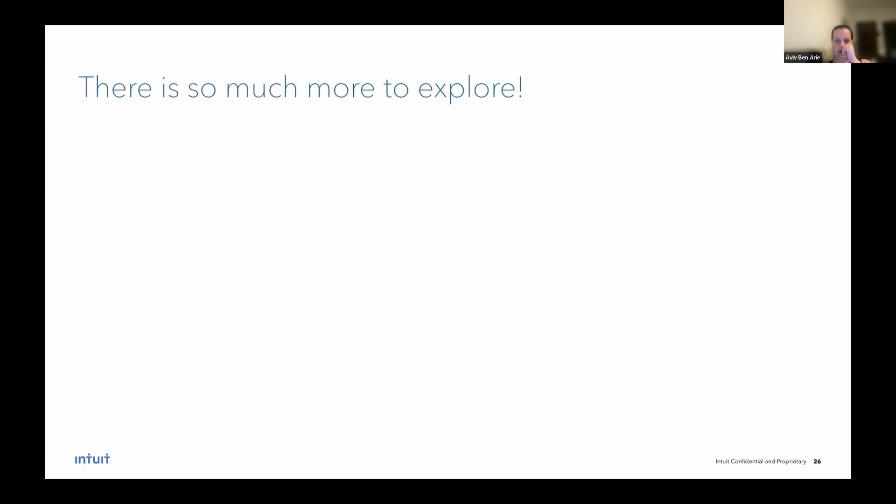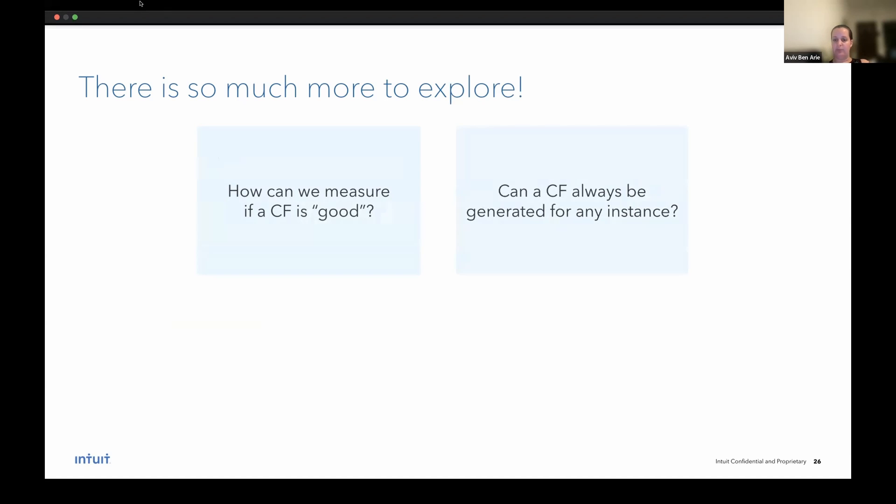So now that we talked a bit about how we want to solve this technical problem, we also understand that there is much more to explore on the more theoretical aspects of counterfactuals as well. There are many open questions that our research group, as well as others, are currently exploring, but all these questions remain open. The first is, how can we measure if a counterfactual is good? This is an open question and explainability in general. Finding a single metric to classify an explanation as good is very difficult. Another question is, can counterfactual always be generated for every single instance? As I said before, there are some packages where the counterfactual generator never converges. Why does this happen?